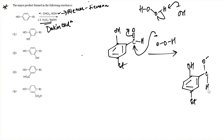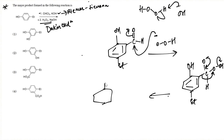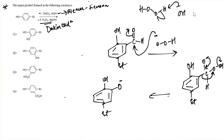This reaction is very similar to the Baeyer-Villiger oxidation — it's essentially a variant of it. When the bond falls back, the carbon migrates and the OH⁻ leaves. Writing out the product: the carbon is directly connected to the electrophilic oxygen, and CO₂ as well as H₂O are released.